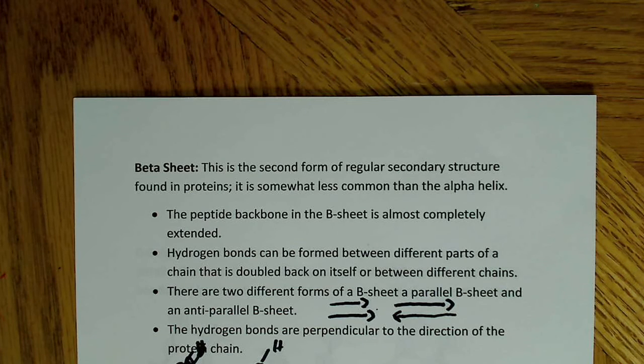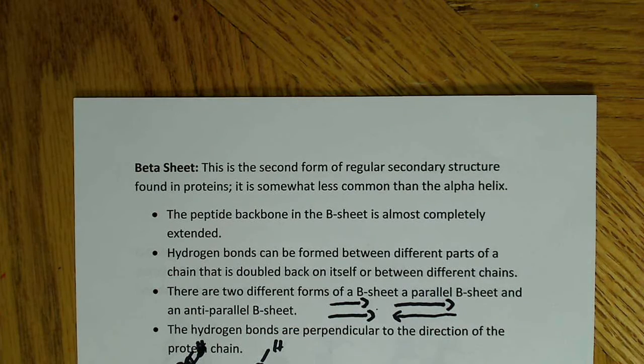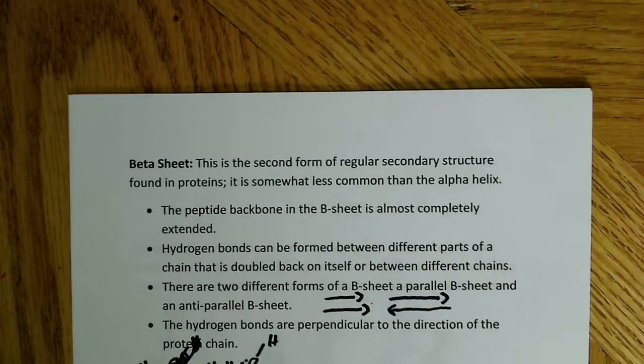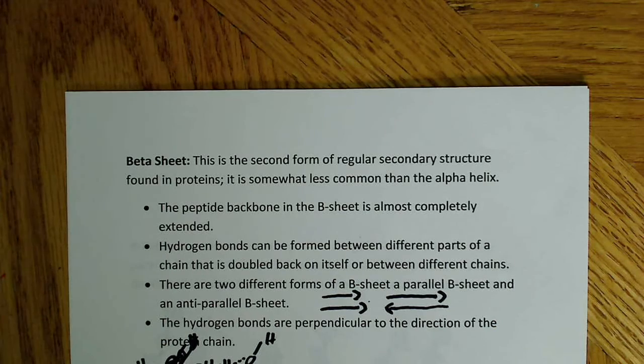Okay, in this video I want to talk about the beta sheet, the second most common secondary structure that you're going to encounter in proteins. I want to re-record this because it didn't look so good the first time, so I want to go back through it again properly here.